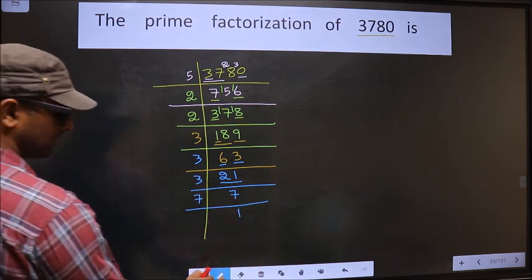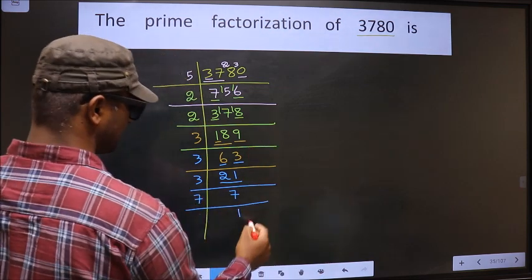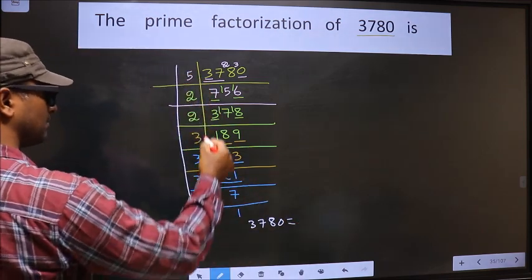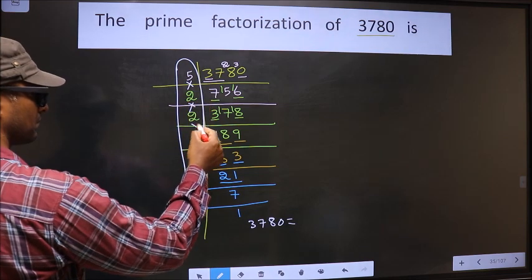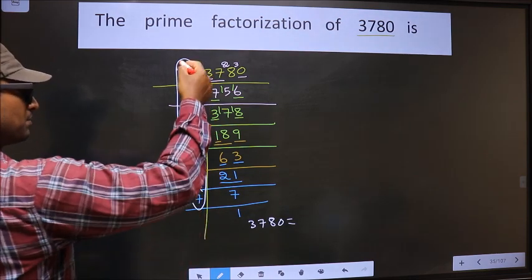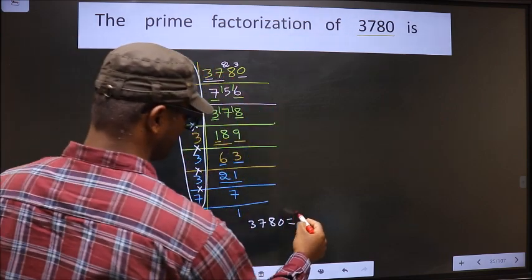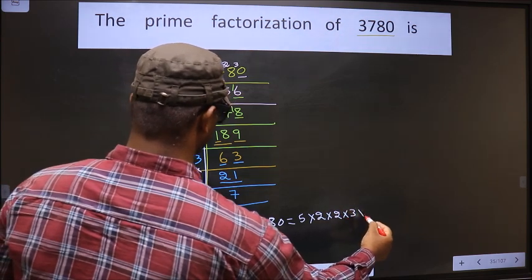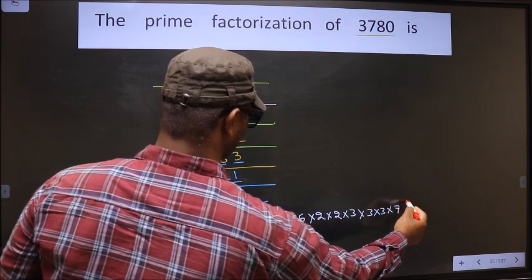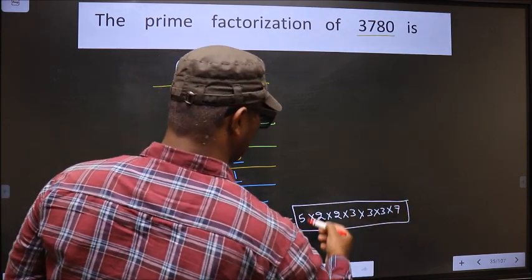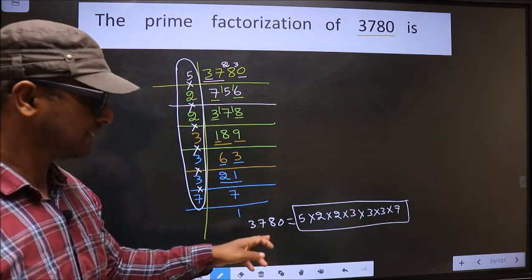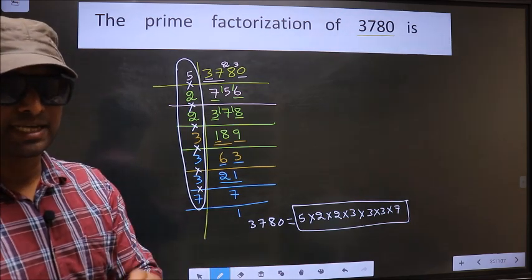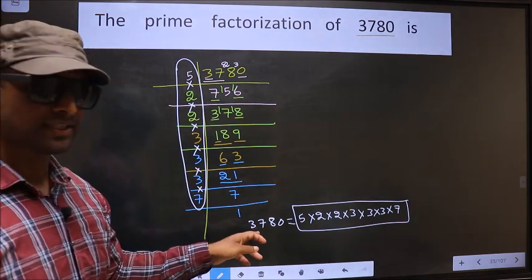We got 1 here. So the prime factorization of 3780 is the product of these numbers. That is 5 × 2 × 2 × 3 × 3 × 3 × 3 × 7. This is the prime factorization of 3780, also called the product of prime numbers of 3780.